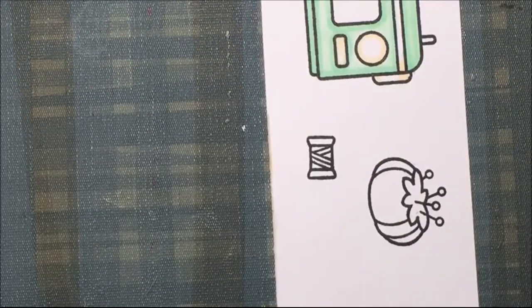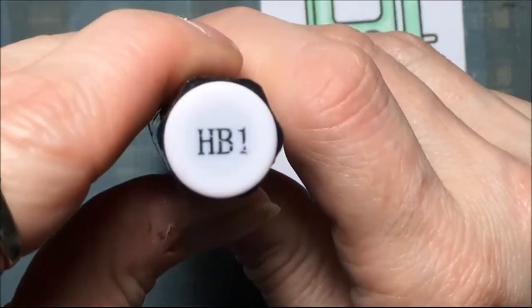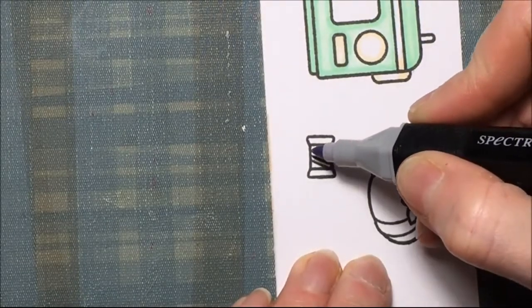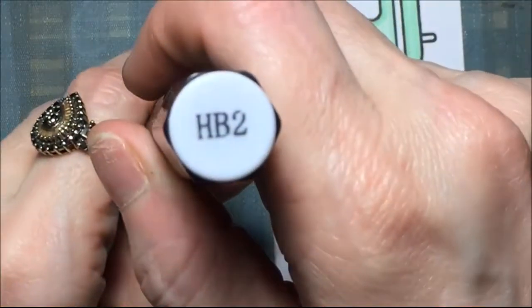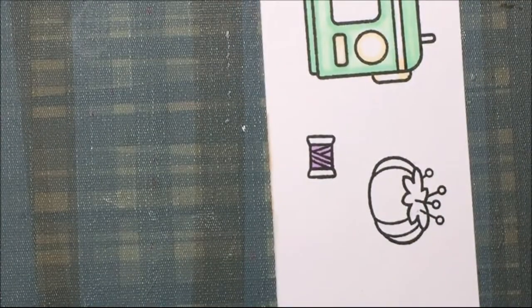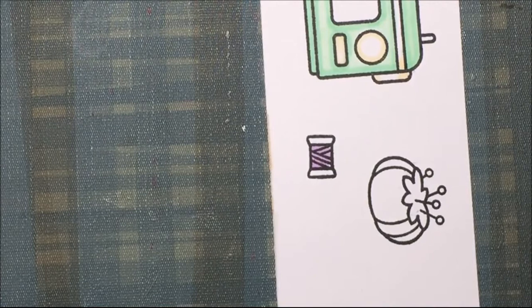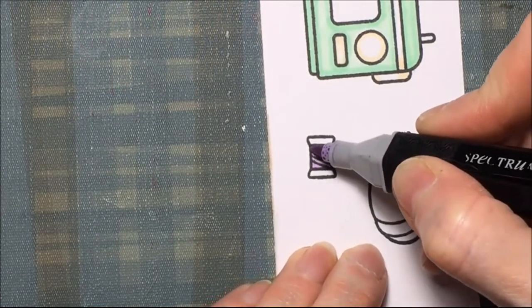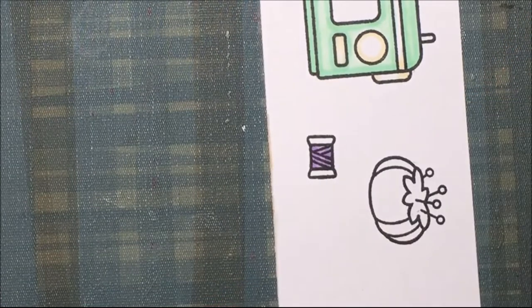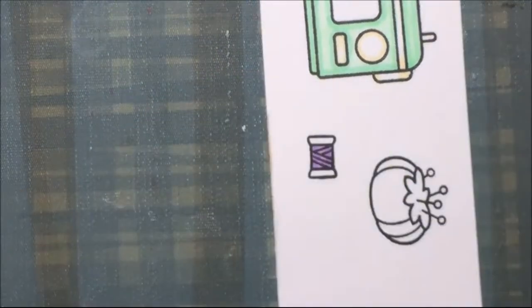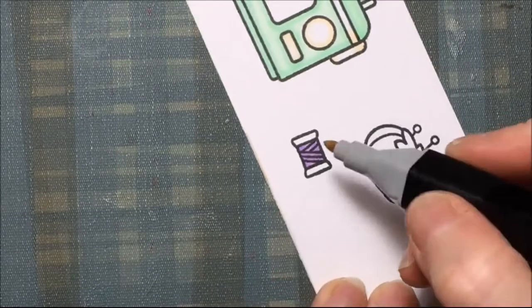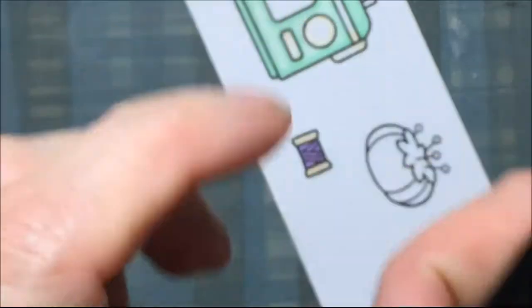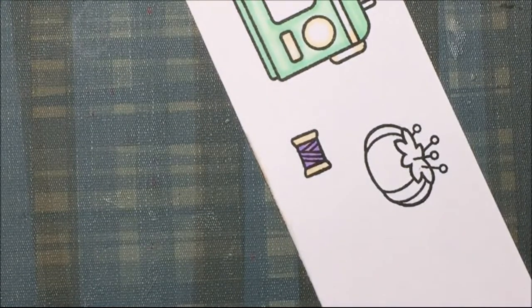Then I'll be coloring the thread with a purple color, HB1, to color the thread. Then HB2 to give it a little bit of shadow, I'll just hit the edges of the lighter purple on the thread. EB1 for the spool of the thread, EB2 to define the spool.